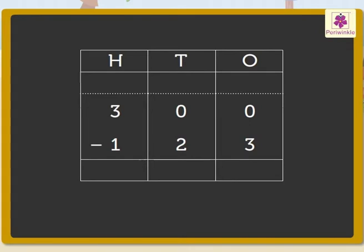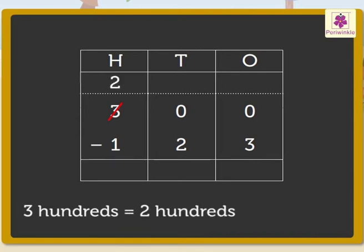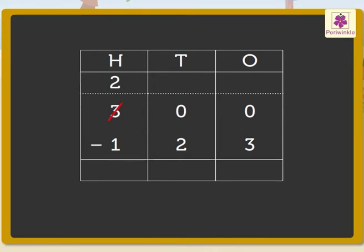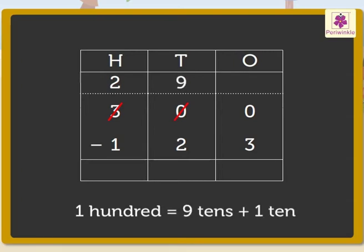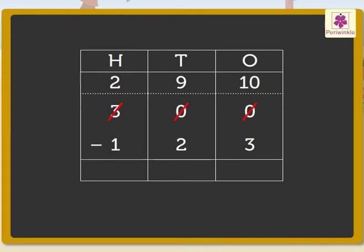So let's regroup the number 300 in hundreds, tens, and ones. Three hundreds is regrouped as two hundreds plus one hundred. Now we regroup one hundred as nine tens plus one ten. Thus, we get 300 is equal to 200 plus 90 plus 10.